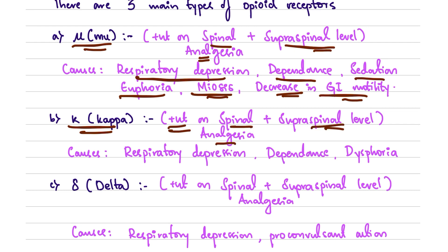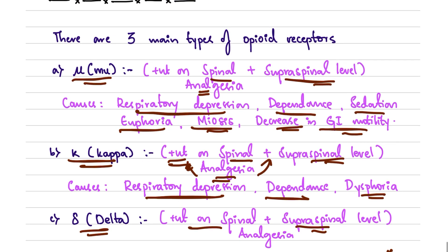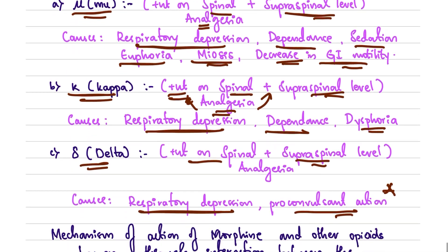Kappa receptor activation also causes respiratory depression, dependence, and dysphoria. The third receptor type is delta, which also acts at the spinal and supraspinal level, producing analgesia. The effects of delta receptor activation include depression and a proconvulsant action.